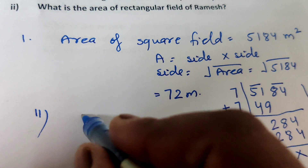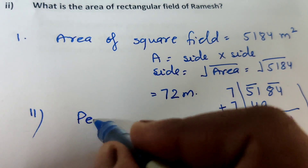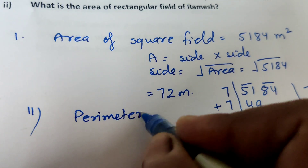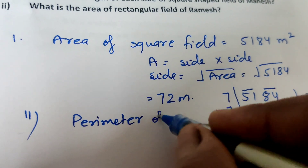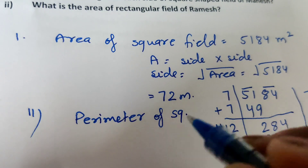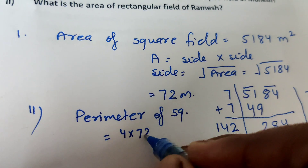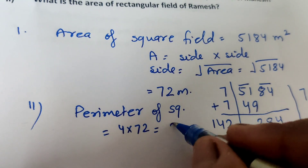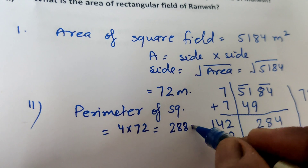Now, the perimeter of the square shaped field. The perimeter of a square is 4 × side, which is 4 × 72, equal to 288 meters.